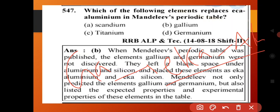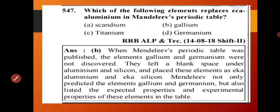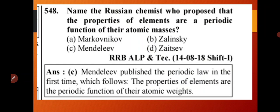This predicted element (Eka-aluminum) is similar to aluminum, sharing isotope-like and similar properties with aluminum. Next question: name the Russian who proposed that the properties of elements are periodic functions of atomic mass.